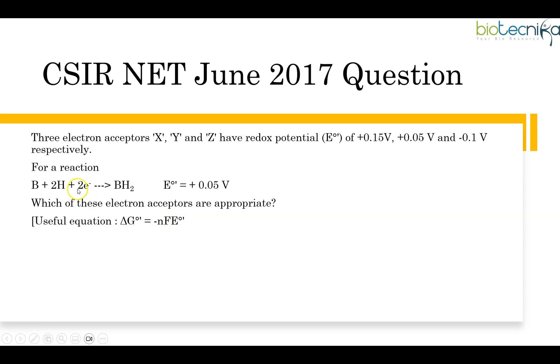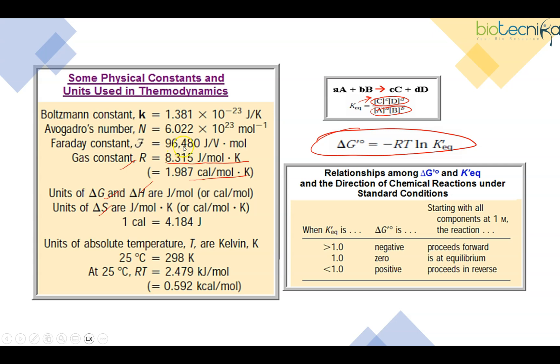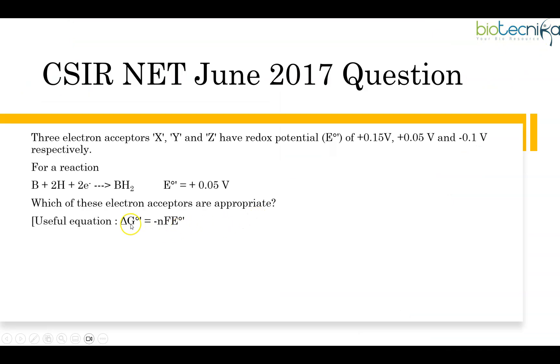What is n? It is the number of electrons which is transferred, that is 2. F is Faraday's constant, as I showed you in the previous equation. Faraday's constant is 96.5 kJ or you can say 96,480 J/V·mol. And another thing is that if you remember the concepts of free energy, if free energy is negative, then that reaction is supposed to be a spontaneous reaction. So if ΔG° is a negative value, that means the reaction will be favorable. In that case, the electron acceptors will be appropriate.